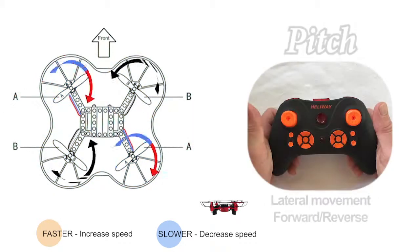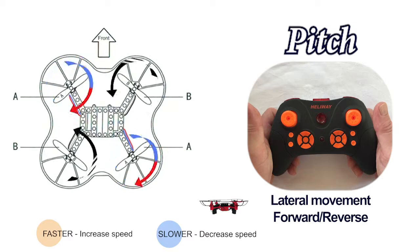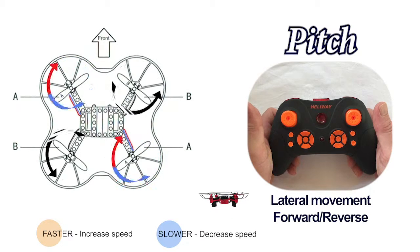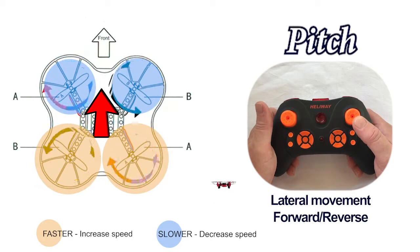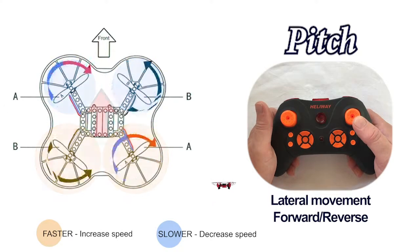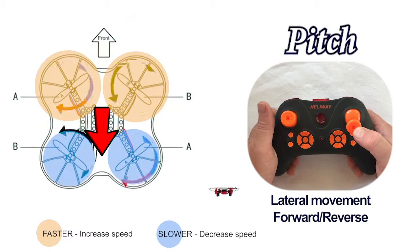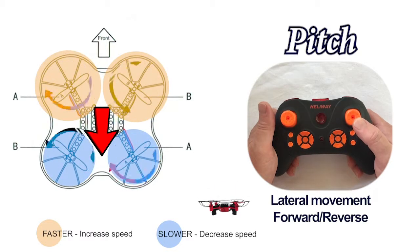Let's look at the right stick on the controller now. That controls a couple of things as well. First of all, pitch. Push that forward, the rear two propellers speed up, the drone tilts forward and moves forward. Pull back and the opposite happens. The front ones speed up and the drone moves backwards.